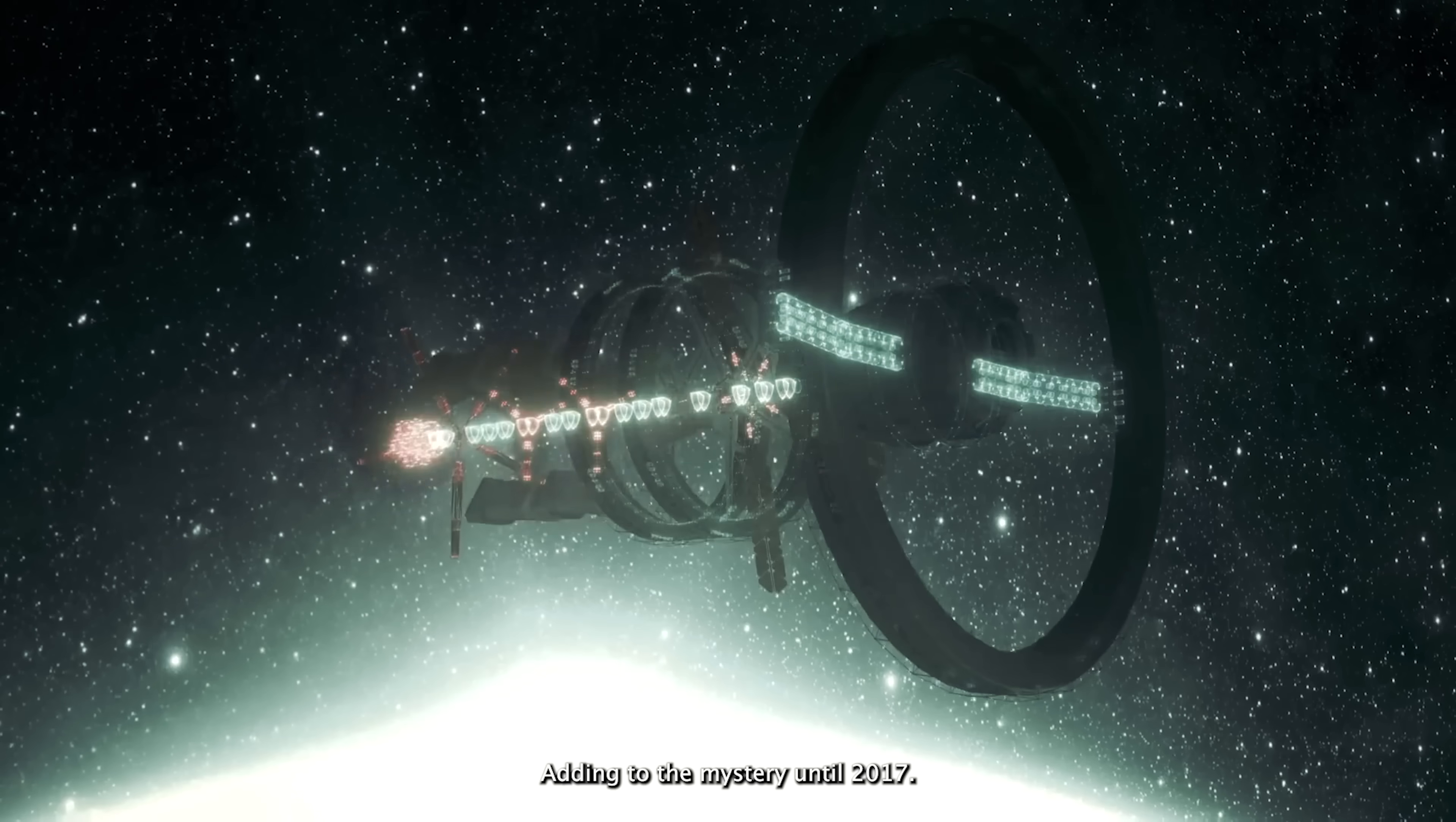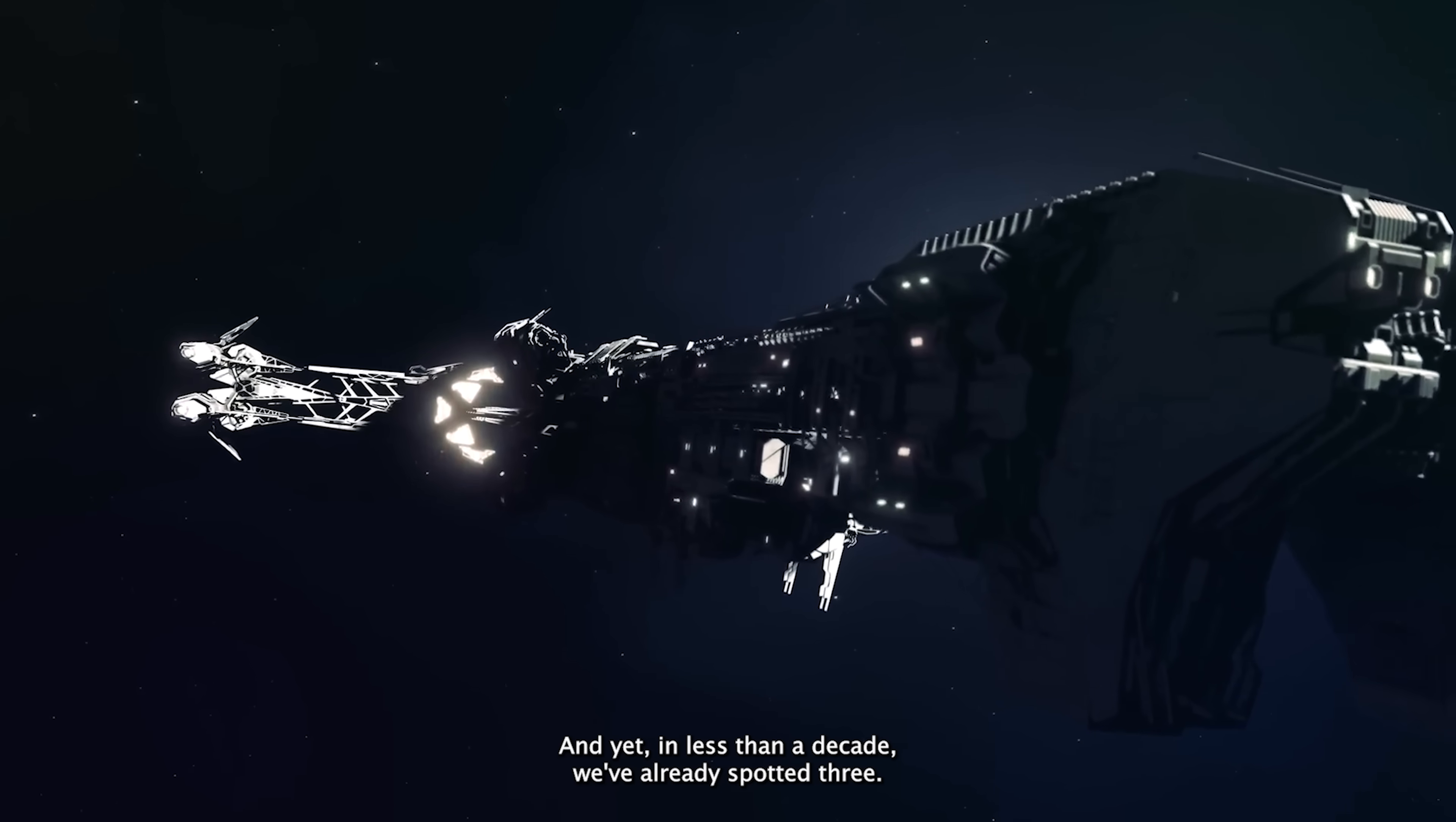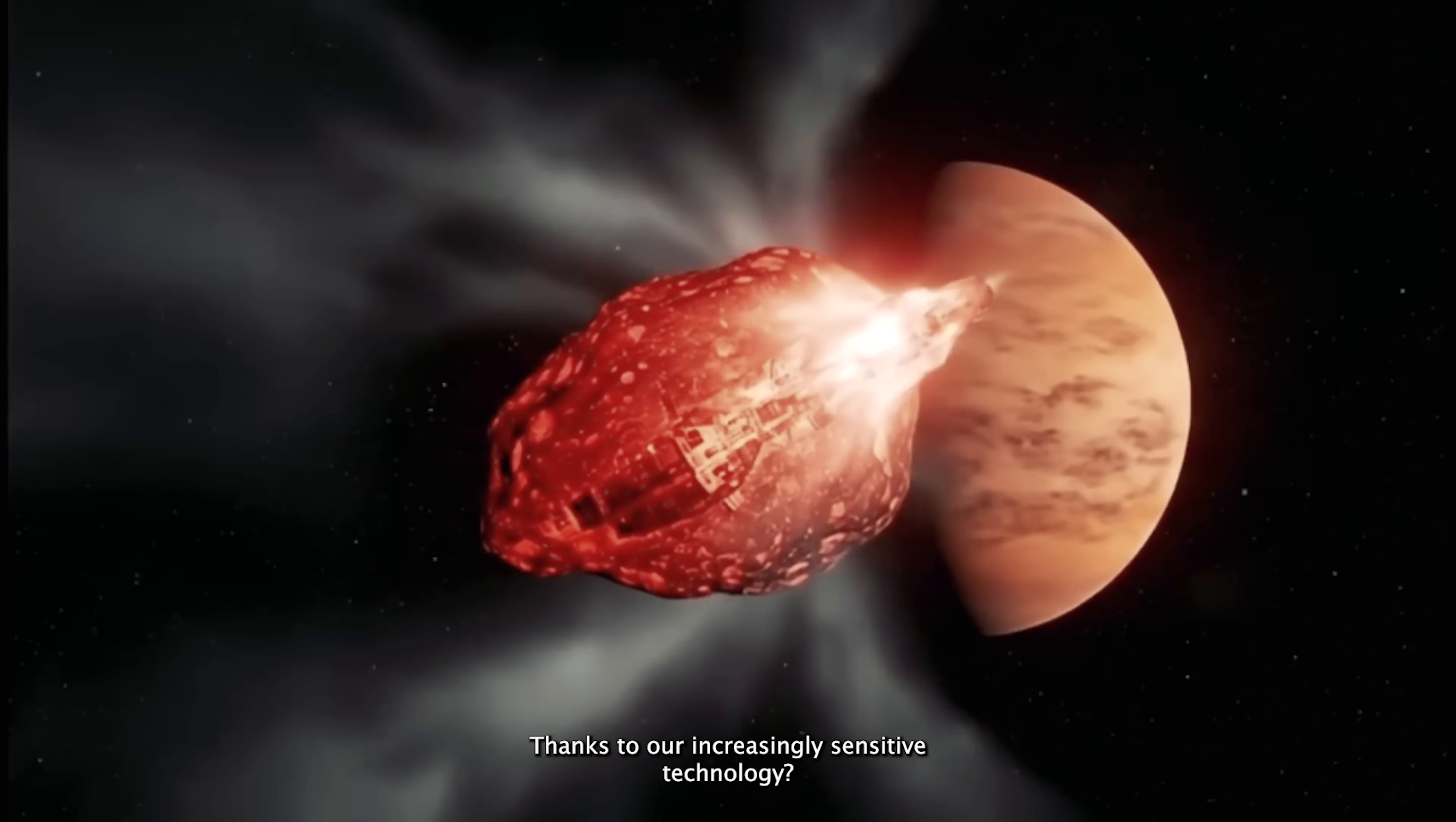Adding to the mystery, until 2017, we had never detected a single interstellar object. Now, within less than a decade, we're seeing our third, and by far the most baffling. And yet, in less than a decade, we've already spotted three interstellar visitors: Oumuamua, 2I Borisov, and now 3I Atlas. Is this mere coincidence? Or have such cosmic wanderers always passed through our solar system, only now becoming detectable thanks to our increasingly sensitive technology?